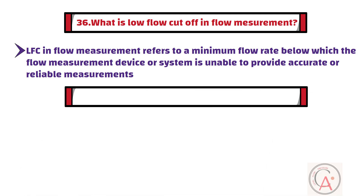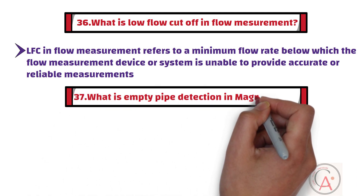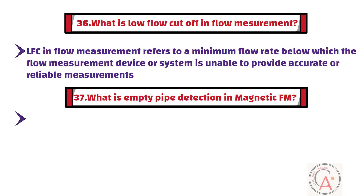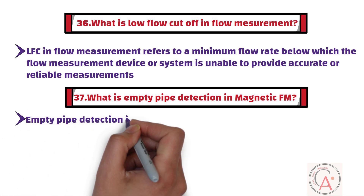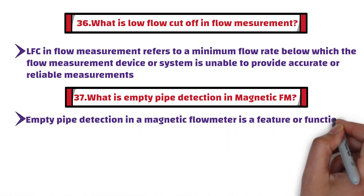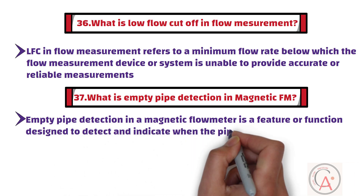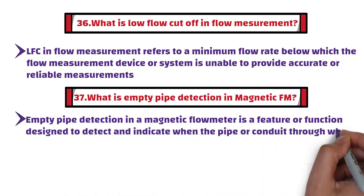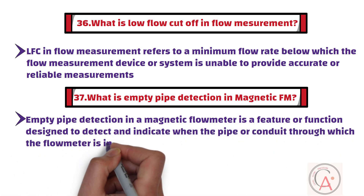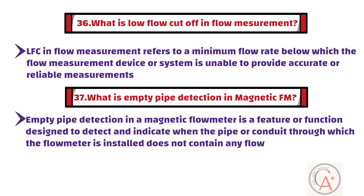Question 37: What is empty pipe detection in a magnetic flow meter? Empty pipe detection in a magnetic flow meter is a feature or function designed to detect and indicate when the pipe or conduit through which the flow meter is installed does not contain any flow — for example, when it is empty.